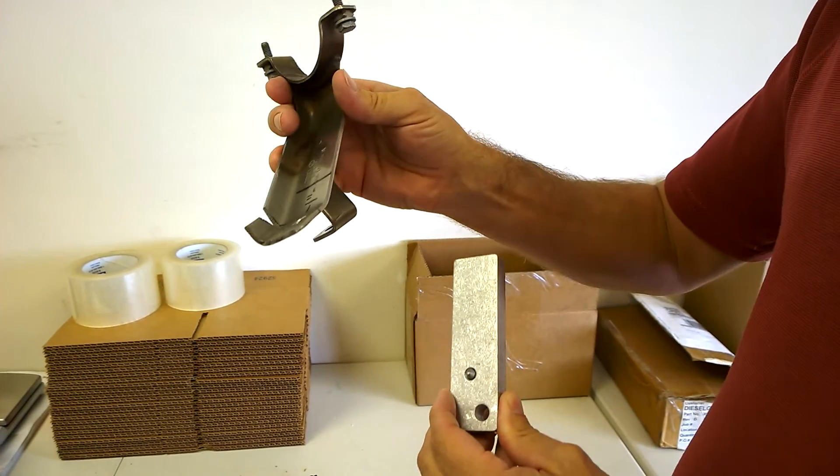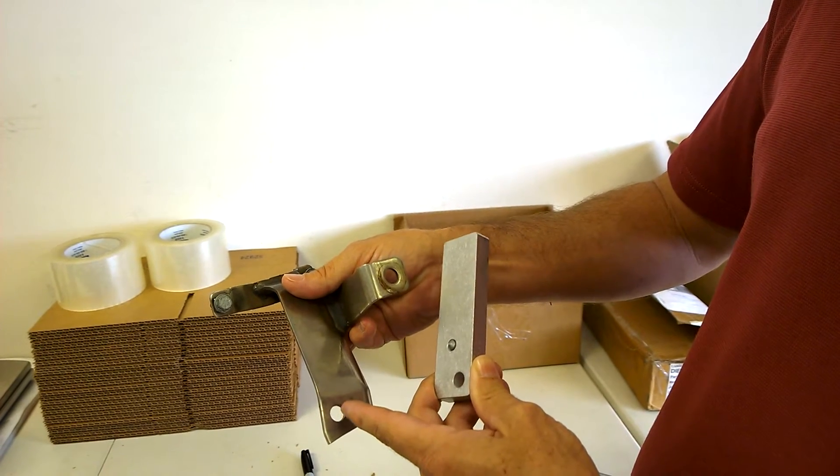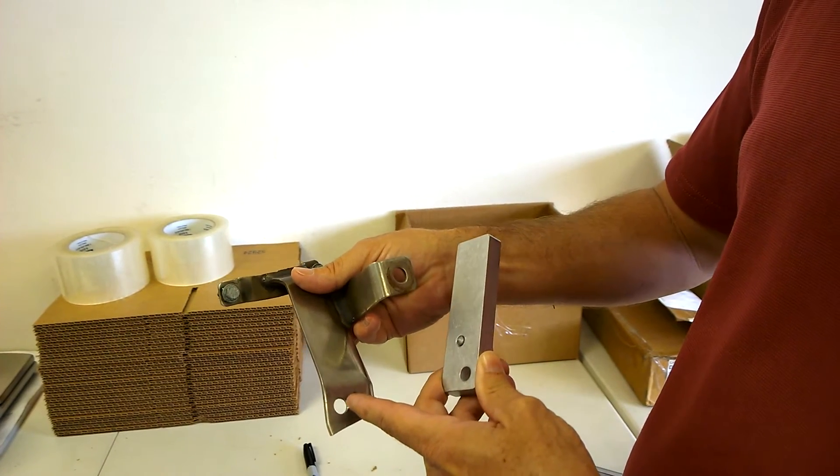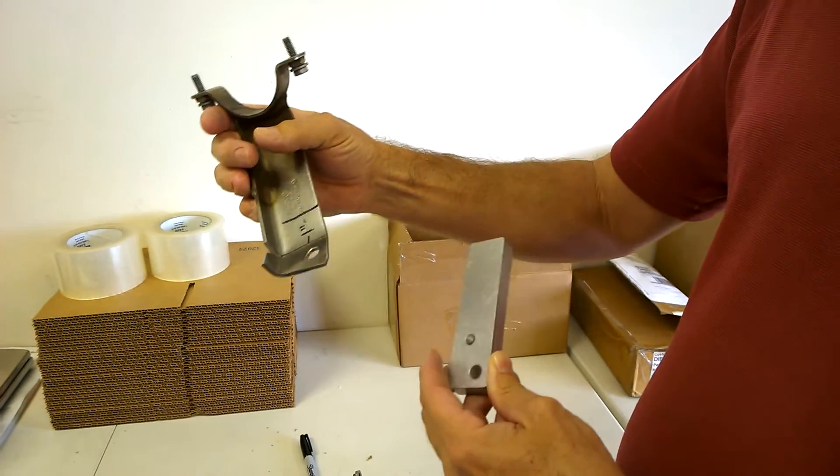And then you take this bracket off, and then you drill a hole, at least 5-16ths 8mm. You're probably going to want a 7-16ths hole, and drill that in the bracket, and then this bracket will be done.